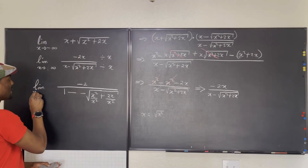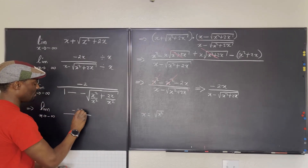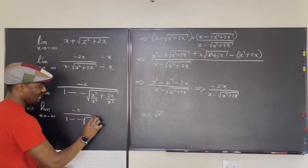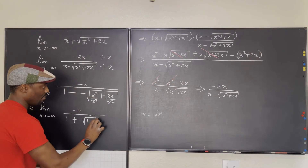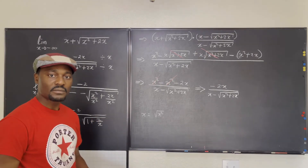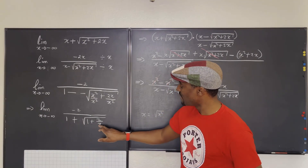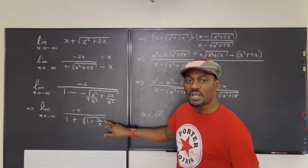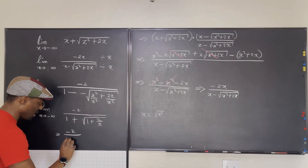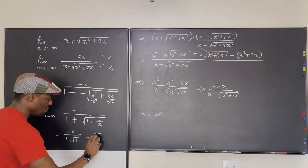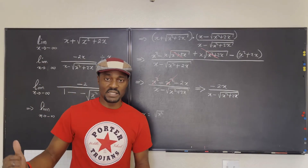So we have the limit as x goes to negative infinity of negative 2 over 1 plus the square root of (1 + 2/x). As x gets extremely large in the negative direction, 2/x goes to 0. So what we have left is negative 2 over 1 plus the square root of 1, which is negative 2 over 1 plus 1, which is negative 2 over 2, giving us negative 1. The limit of this expression is negative 1 as x approaches negative infinity.